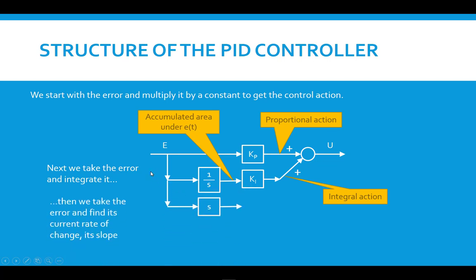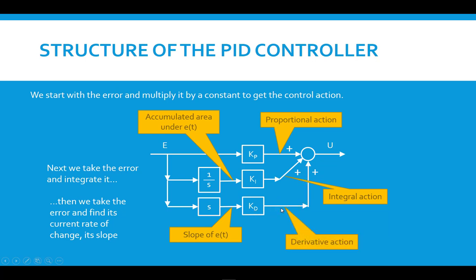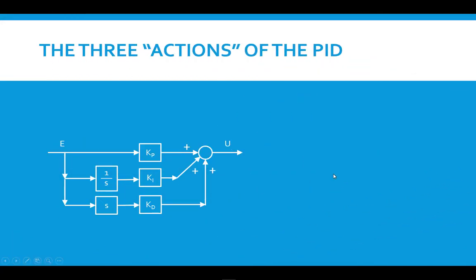Then we take the error and take its derivative, which gives us the slope of the error curve at the current point in time. We multiply it by a constant and feed it downstream — this is the derivative action of the controller. The output command to the actuator is the sum of these three actions.